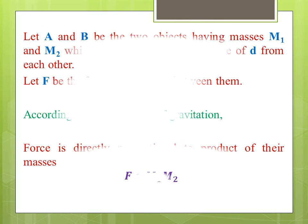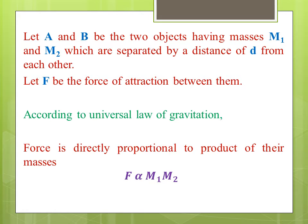Let A and B be the two objects having masses m1 and m2 which are separated by a distance of d from each other. Let F be the force of attraction between them. According to universal law of gravitation, force is directly proportional to product of their masses, that is, F is proportional to product of m1 and m2.